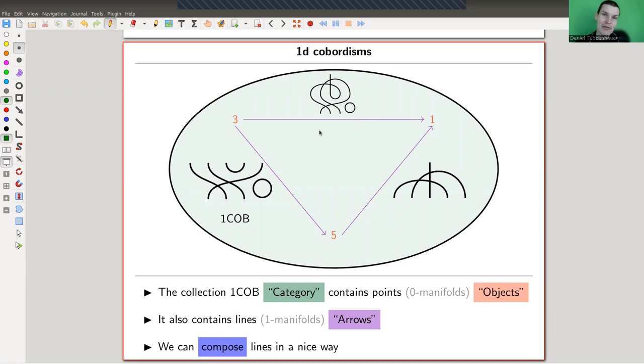But first, I need to define what I'm talking about. I need to define the Brauer monoid, which is already cool in itself, and the contents of this video. If you would like to see some nice diagrams, this is your video.